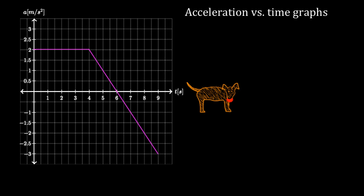If we just read this graph, it says that Daisy had two meters per second squared of acceleration for the first four seconds, then her acceleration dropped to zero at six seconds, and then her acceleration became negative until it was negative three at nine seconds. But from this, we can't tell if she's speeding up or slowing down.